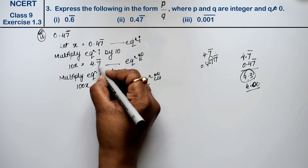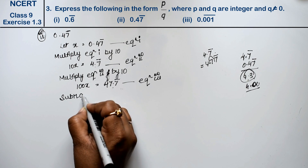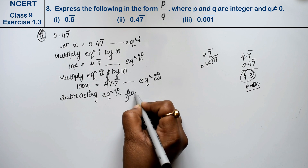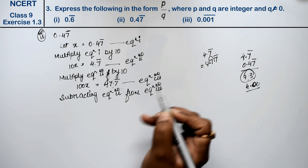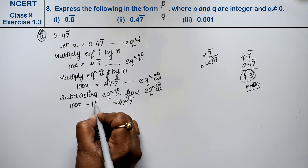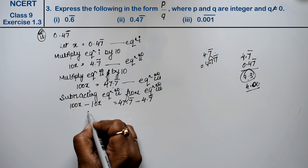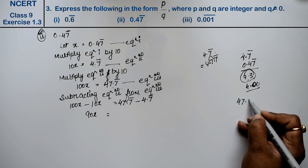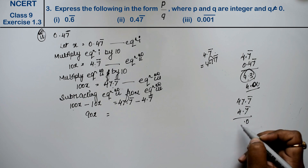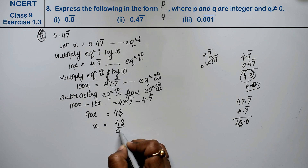Now we subtract equation second from equation third. Third minus second: 100x minus 10x gives 90x, and 47.7̄ minus 4.7̄ gives 43. So 90x equals 43, meaning x equals 43/90. That is the answer for the second part.